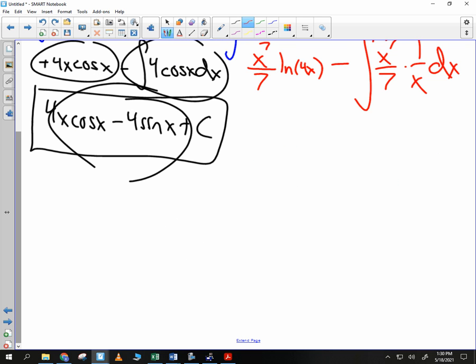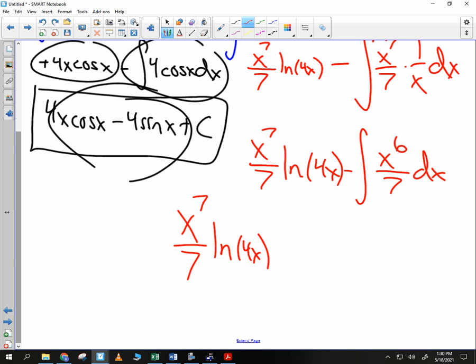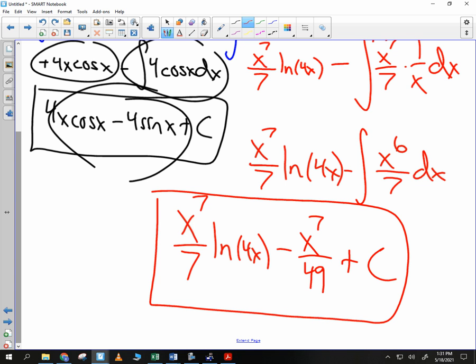So we have x to the 7th over 7 times the natural log of 4x minus the integral of x to the 6th over 7 dx, because the x to the 7th and the x in the denominator will cancel. So I just need to know the antiderivative of x to the 6th, and now it will be over 49. So if you take that antiderivative, that is 1/7 times x to the 6th. The antiderivative would be 1/7 times x to the 7th over 7. So we get x to the 7th over 49.